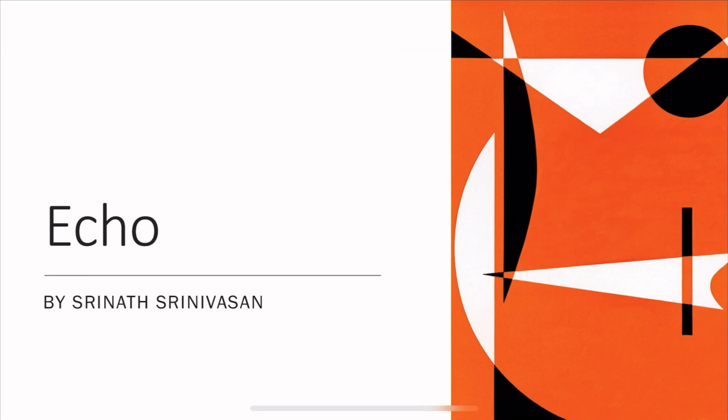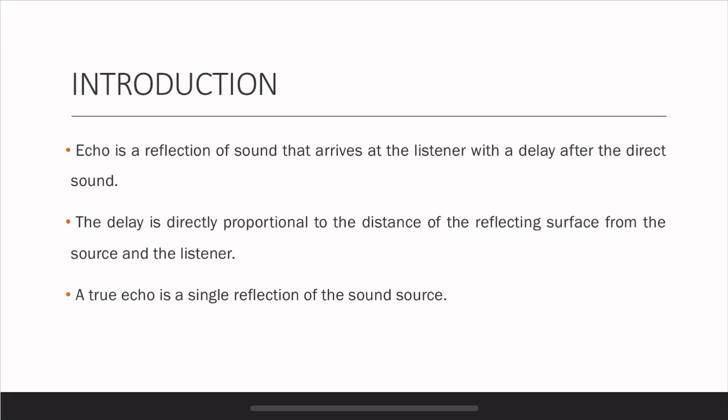Hello everybody, today we'll talk about what is an echo. Echo is a reflection of sound that arrives at the listener with a delay after the direct sound. The delay is directly proportional to the distance of the reflecting surface from the source and the listener. Greater the distance, greater is the delay.